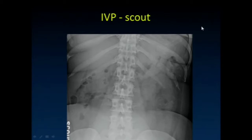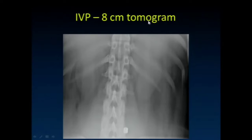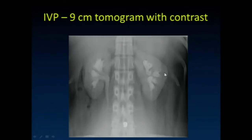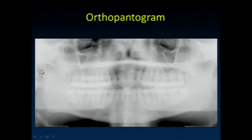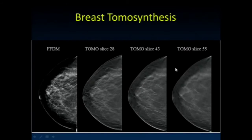When I started residency in 2001–2002, we used to do a lot of intravenous pyelograms — we'd take an image of the patient, guess how deep the kidneys were, do a tomogram, and say the kidneys were at about that depth before giving contrast. The panorex unit is another type of conventional tomography, where we rotate the x-ray tube and imaging acquisition device together to get an image with the plane of the mandible in good focus. Breast tomosynthesis is another example of conventional tomography.